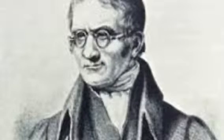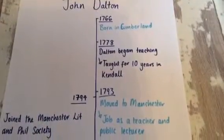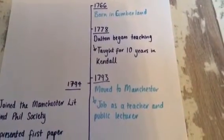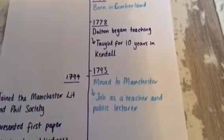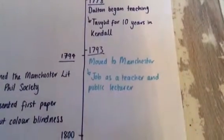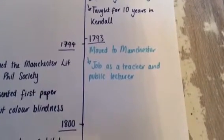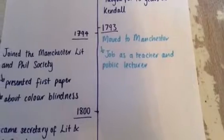Chemistry podcast: John Dalton, 1766 to 1844. John Dalton was born in 1766 in Cumberland. He was taught by his father in his early life, but he himself began teaching in 1778. After 10 years of teaching in Kendal, he moved to the University of Manchester where he had a job as a teacher and a public lecturer.